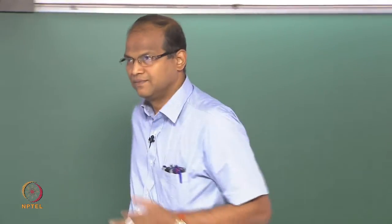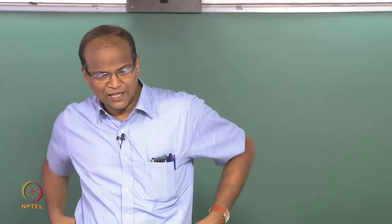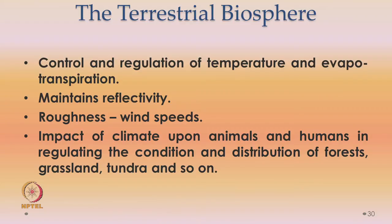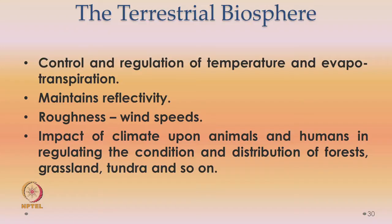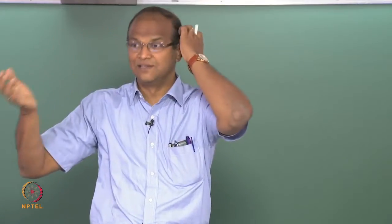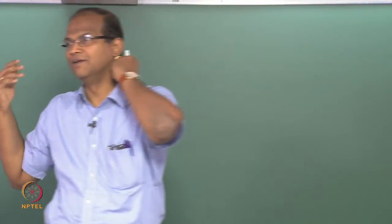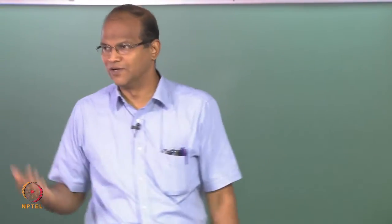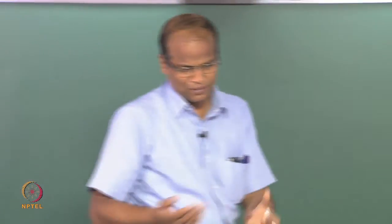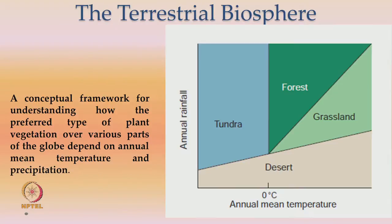The impact of climate upon animals and humans, and in regulating — because of the terrestrial biosphere — we are also there, animals are also there. The impact of all animal life on regulating the condition and distribution of forest through forestation, deforestation — all these things matter. Forest fires, naturally induced forest fires and man-induced forest fires, all have a big role to play in deciding the climate of the earth.